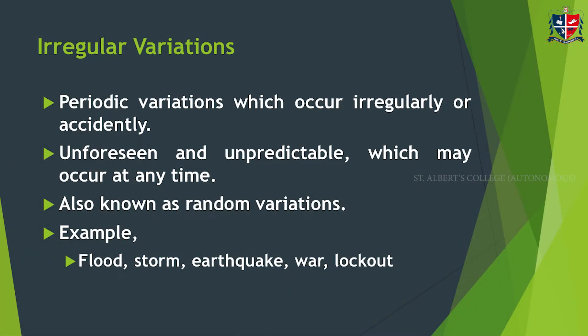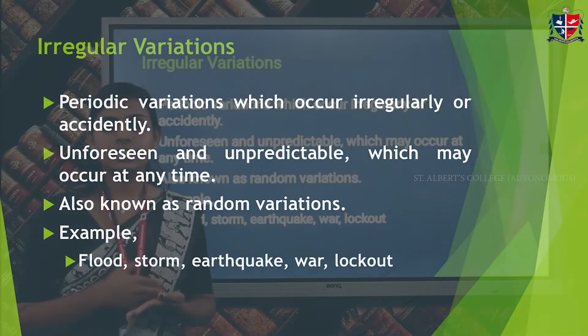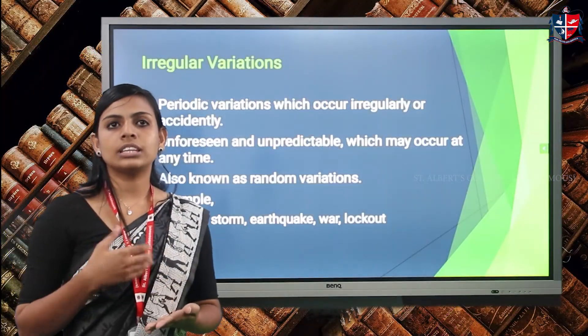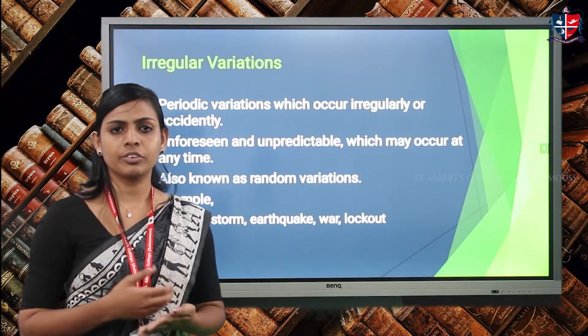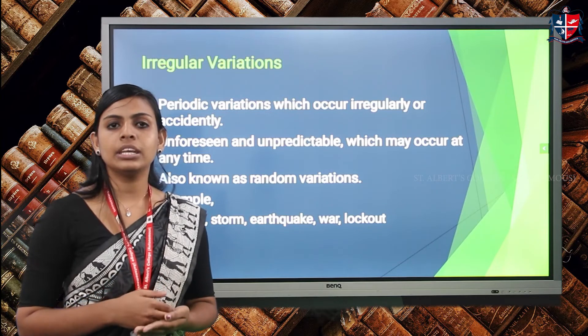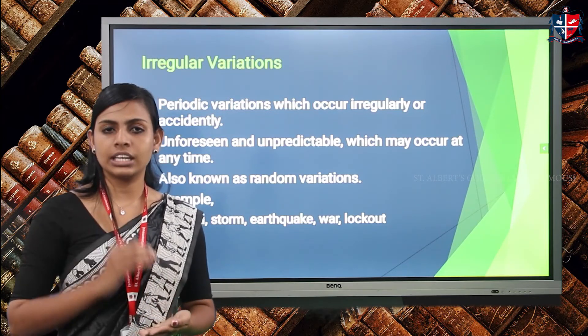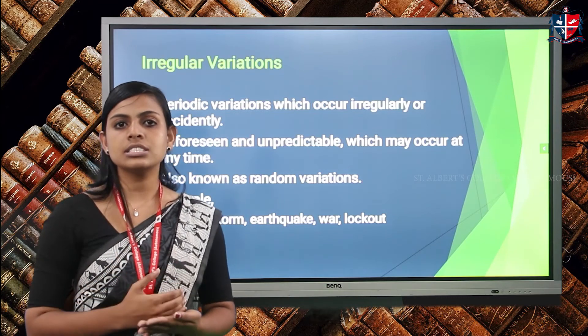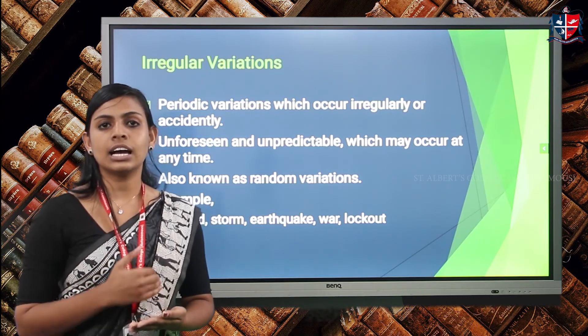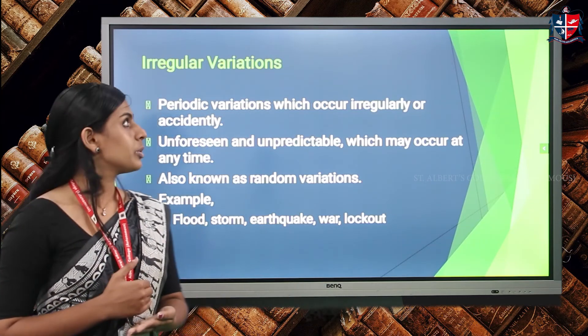The last component is irregular variations. These are irregular or unanticipated things — for example, if there is a sudden lockdown or something unexpected happens to a company or factory, there will be an unexpected hike or decrease in production. Such variations are considered under irregular variations.